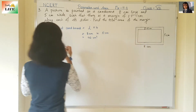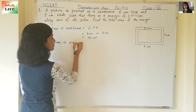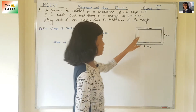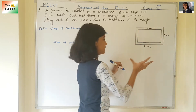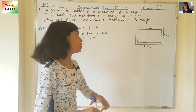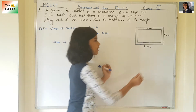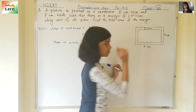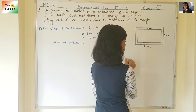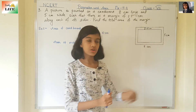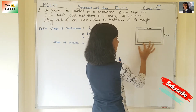Now let's find out the area of the picture. We don't know the length and breadth of the picture, but we know the width of the margin and the length and breadth of the cardboard. If the margin is 1.5 cm on each side, we subtract 1.5 cm plus 1.5 cm from 8 cm to get the length of the picture.